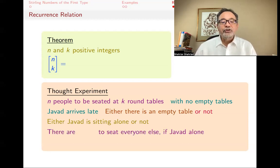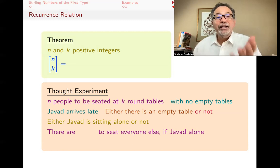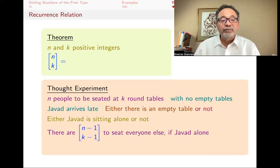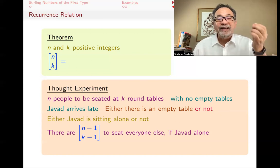Now, so if Javad is alone, well, Javad is going to, I mean, if there's one empty table, Javad is going to sit at that. But how many other ways could have we made that so that everybody else is sitting and there's one empty table? Well, we had n-1 people and k-1 tables, and we wanted to seat them at those n-1 people at k-1 tables with no table going empty. I don't know the answer to that, but I can write it in terms of Stirling numbers of the first type. It's [n-1, k-1]. So that's the number of ways that I can put n people around k tables with Javad sitting alone.